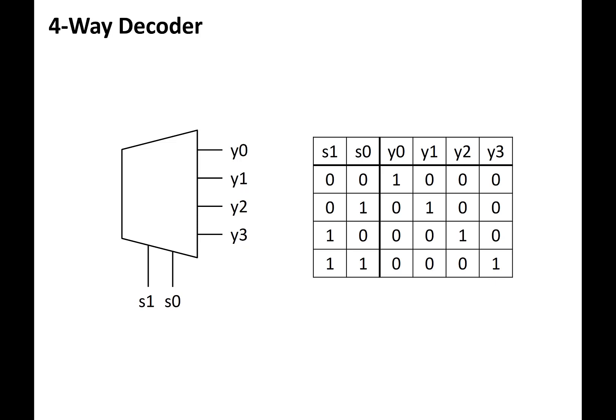For example, if S1 and S0 are 1 and 0 respectively, then output Y2 will be asserted as a 1, while the others are at 0.